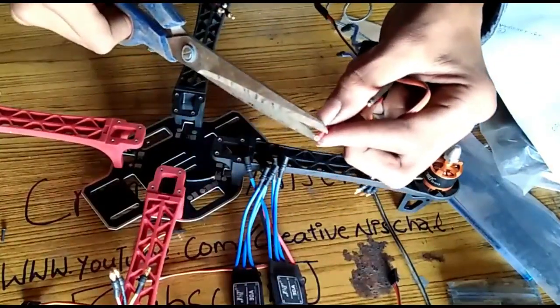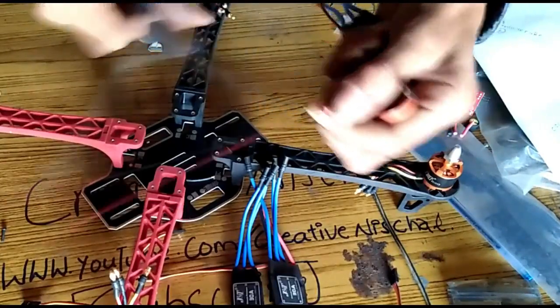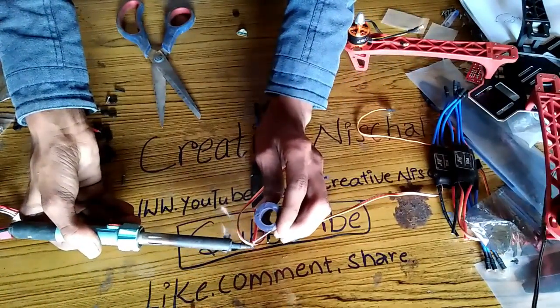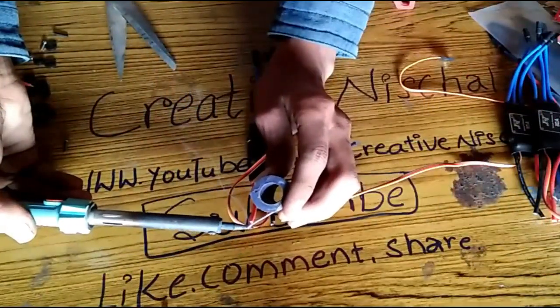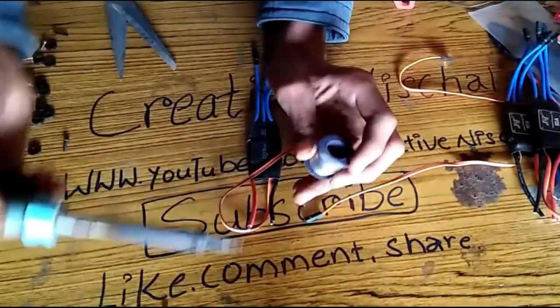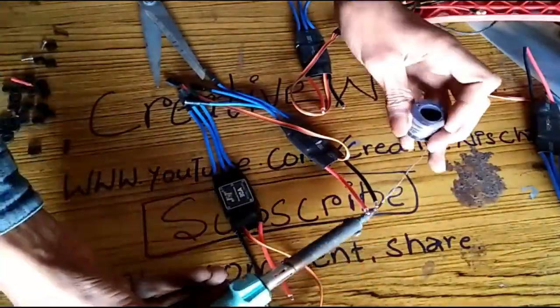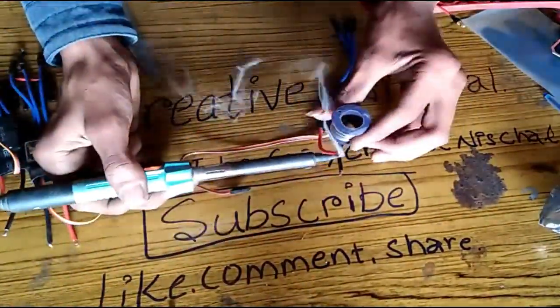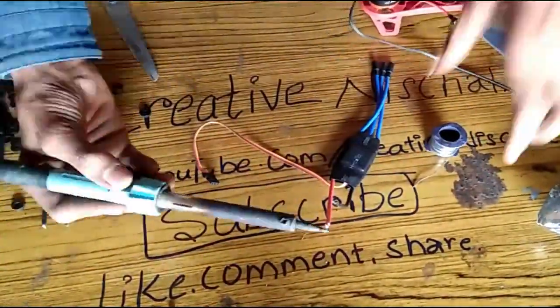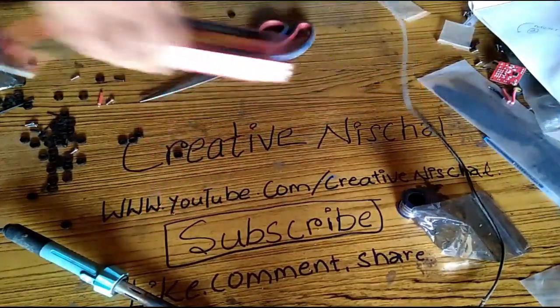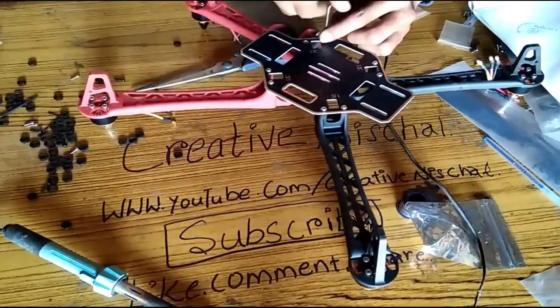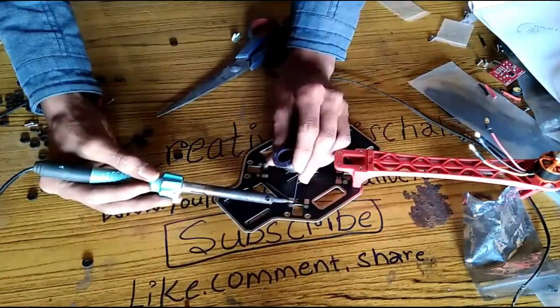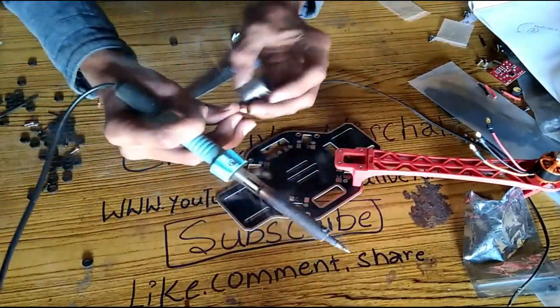After shortening the length of all the power wires of ESCs, I will remove a bit of insulation in order to solder it to my frame. Then fill the wire with a lot of solder. Soldering the power wires from the frame is a bit difficult, so I will unscrew all of its arm and then solder the power wires.